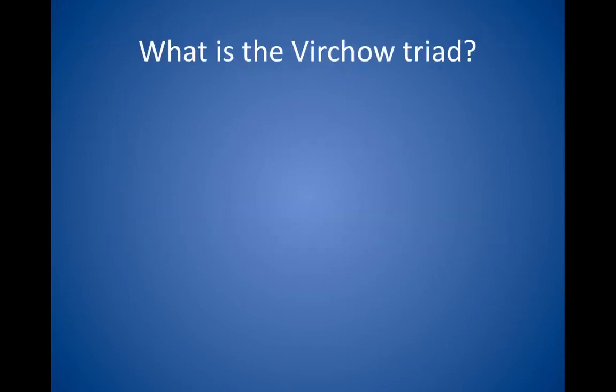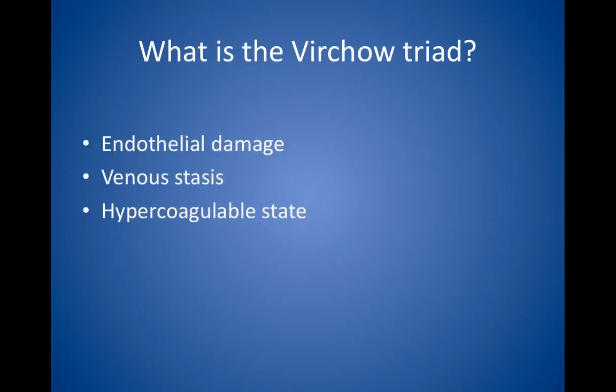What is the Virchow triad? The Virchow triad consists of three findings associated with deep venous thrombosis: endothelial damage, venous stasis, and hypercoagulable state. These broad categories should help you remember when to think about the possibility of DVT.